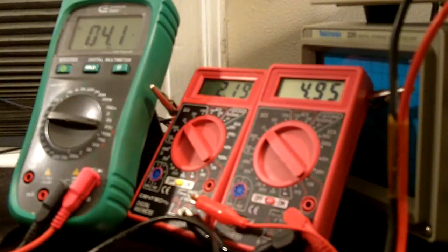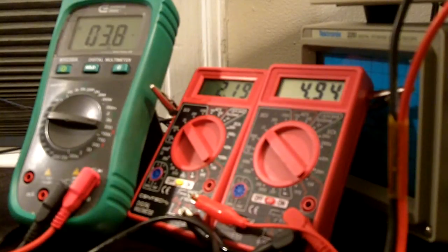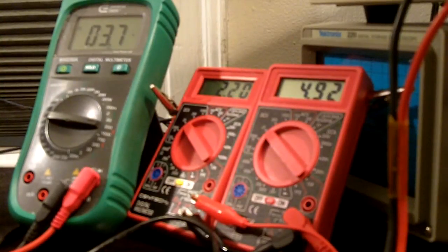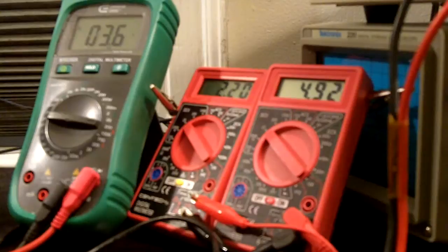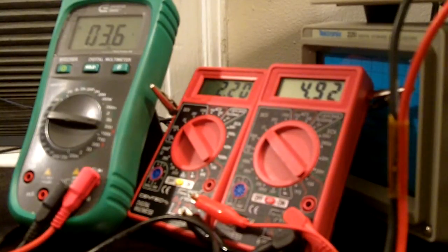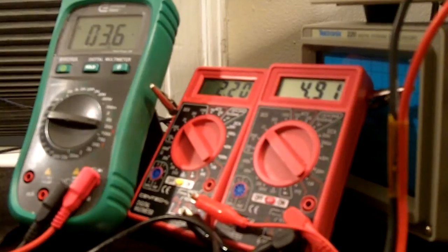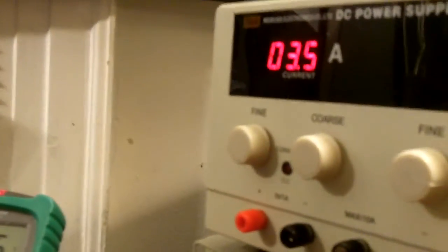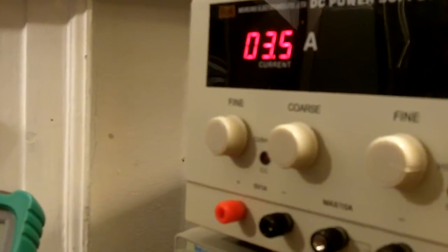And it's dropped down to 3.6. Now we are pulling 3.1 amps at 4.1 volts, and we're at 3.6. You can see it's rock solid at 2.2 amps and we're only pulling 3.5 to 3.6 amps.